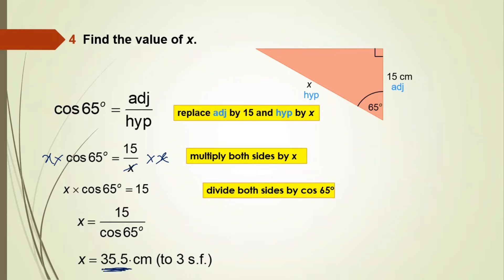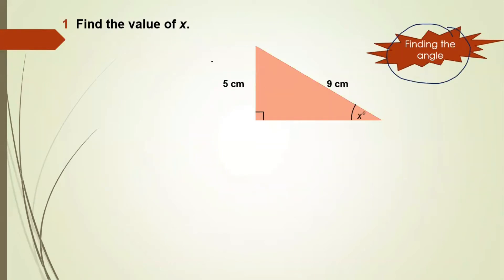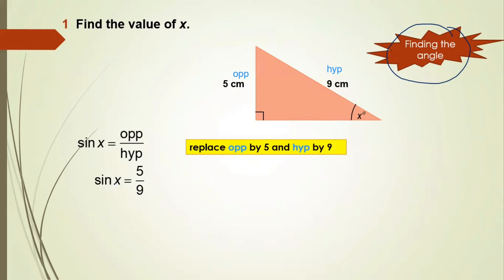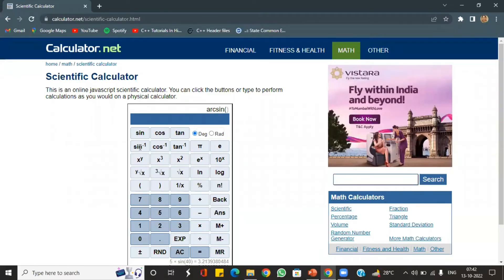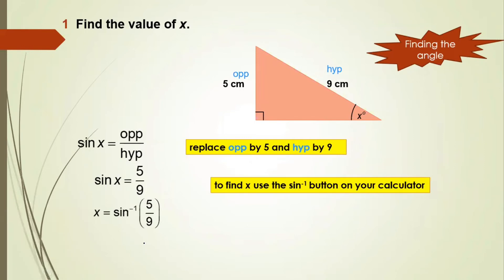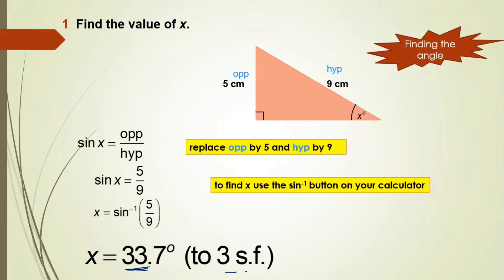Now let us understand how to find the angle when two sides are given. Find the value of x, where x is an angle, opposite = 5 cm and hypotenuse = 9 cm. We use the sine ratio: sin x = 5/9. To find x, we use the sine inverse button on the calculator: x = sin⁻¹(5/9) = 33.748 degrees, which to 3 significant figures is 33.7 degrees.